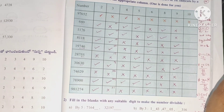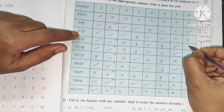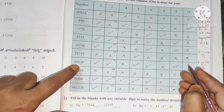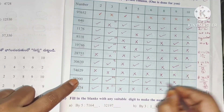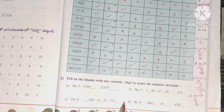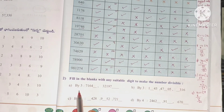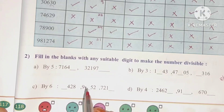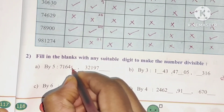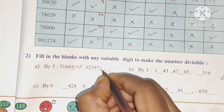For divisibility by 10, the units place must be 0. Check each number's units place. Now for problem 2: fill in the blanks with any suitable digit to make the number divisible by 5 — units place must be 0 or 5.